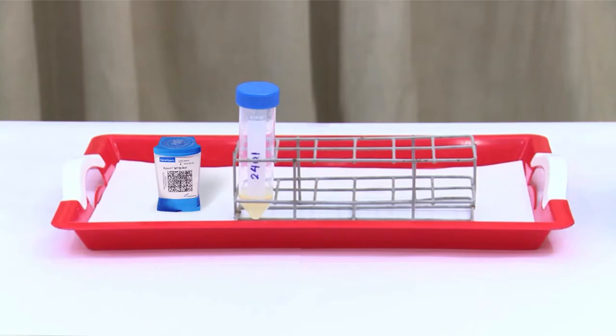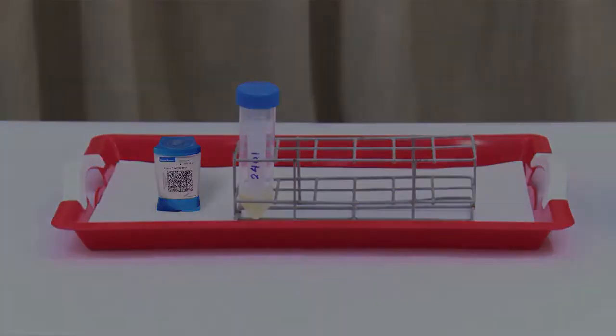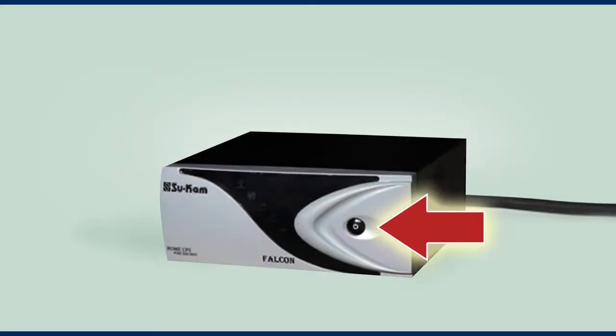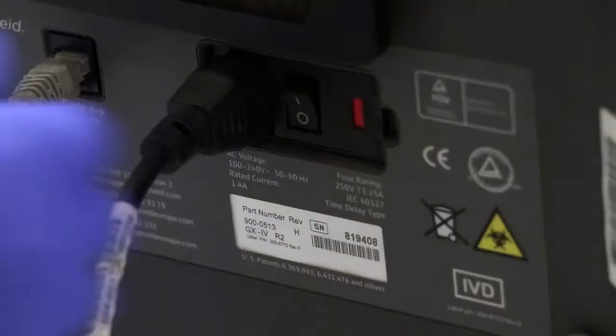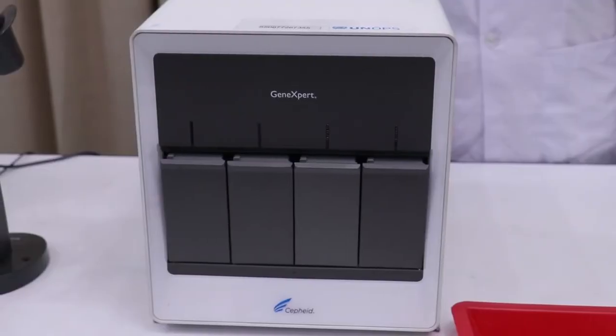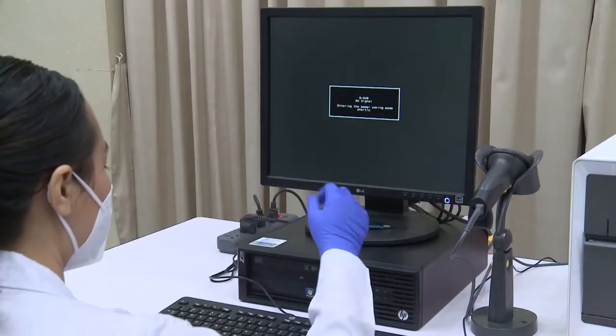To load the GeneXpert cartridge on the machine, switch on the main power source, switch on the UPS, and then switch on the GeneXpert machine. Make sure the green light appears on the Xpert machine.